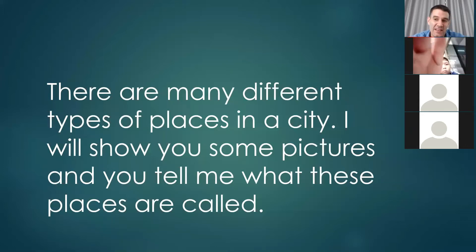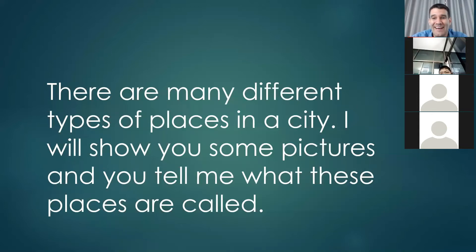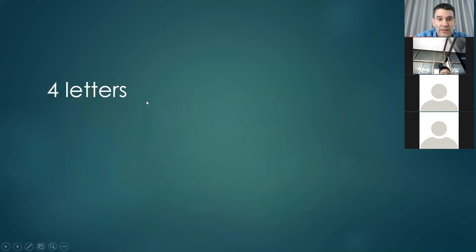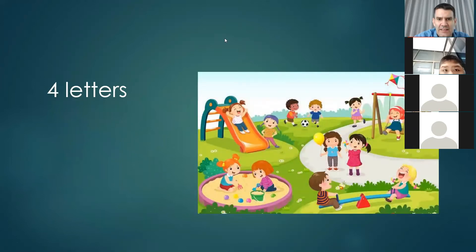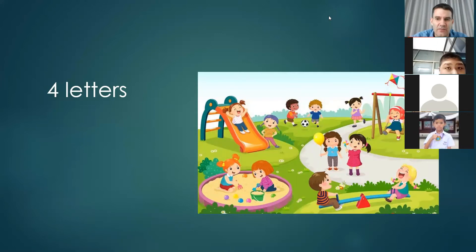There are many different types of places in a city. I will show you some pictures and you tell me what these places are. We will start with some very common places that you should already know, especially if you are in IEP — this should be review. If you know the place, you can type in the chat. The first place has four letters. Here is a picture — where children can play, with lots of trees, flowers, and grass.